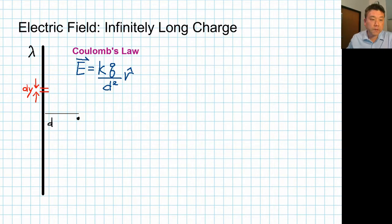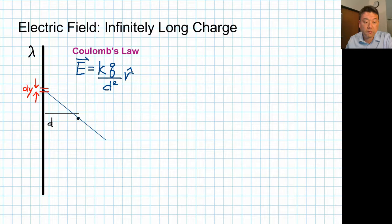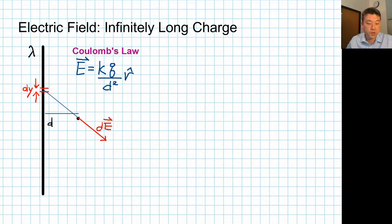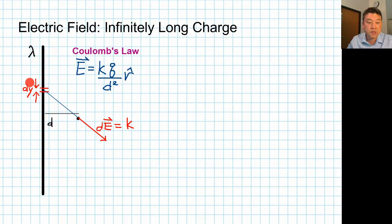For this small amount of charge, we can treat it like a point charge and use Coulomb's law. Let's figure out the contribution to the total electric field from this small portion. We should start carefully with the direction of the electric field — from the source, the small section of the wire, through the point, and radially outward. The small contribution dE to the electric field equals k times the small amount of charge, which is lambda times dy.